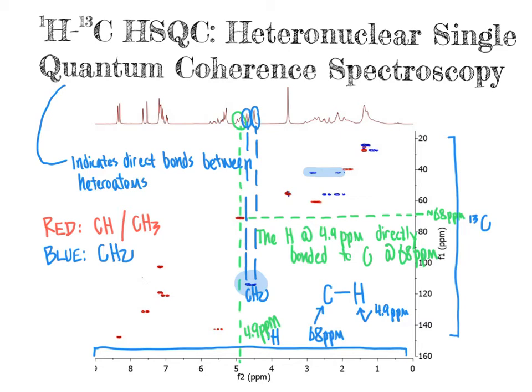HSQC is a very useful experiment for determining which heteroatoms are directly connected to one another — in this case, which hydrogens are directly bonded to which carbons. If the experiment is run appropriately, we can also determine which groups are CH or CH3 (shown as red) and which are CH2 (shown as blue), although this information is not always provided. Sometimes HSQC spectra are run without giving CH/CH2/CH3 distinction, but when that information is available, it is certainly worth using.